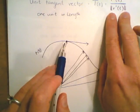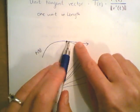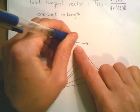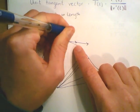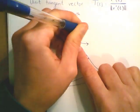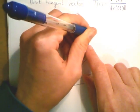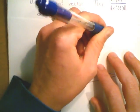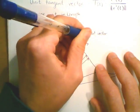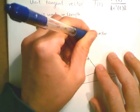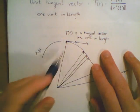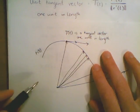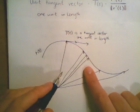Our derivative function is going to be exactly tangent to this curve. This represents something exactly tangent. We take that and shrink it down so it is exactly one unit in length. So our unit tangent vector T of t is a tangent vector, one unit in length.